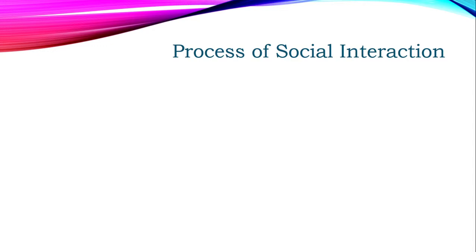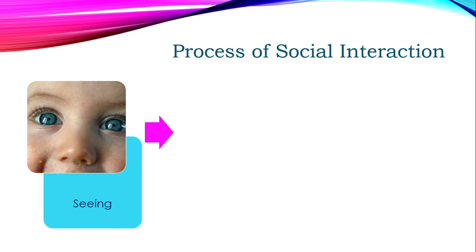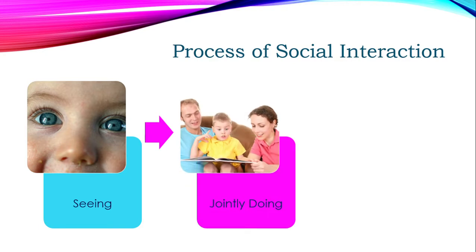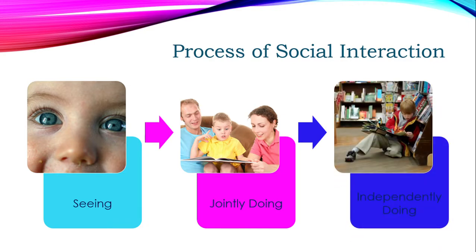The process of social interaction involves a step-by-step progression from social interaction to mastering a task. The first step is seeing — where you observe the things around you, like a baby watching their parents read to them. The second step might be that young child reading with their parents. And the third step would be the young child independently reading on their own.